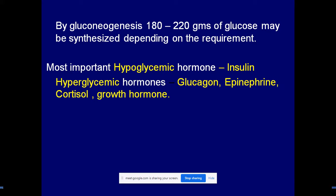After a heavy meal, digestion takes place and the blood glucose concentration increases because the diet contains a lot of carbohydrate. Before the glucose increases beyond the threshold value, insulin is produced in response to hyperglycemia. Insulin stimulates body cells to carry out the glycolysis pathway and citric acid cycle, so glucose is oxidized, energy is released, and the glucose concentration in the blood comes down. That is why it is called a hypoglycemic hormone.